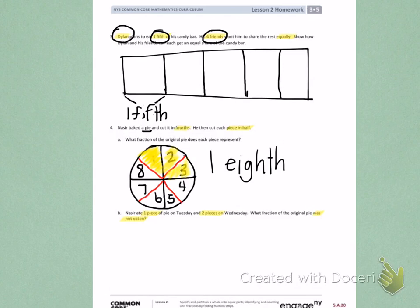To find out what fraction of the original pie was not eaten, I need to count which portions are not colored in. Since these are divided as eighths, I need to label them as eighths. Count the portions that were not eaten, fill them in the blank, and label them as eighths.